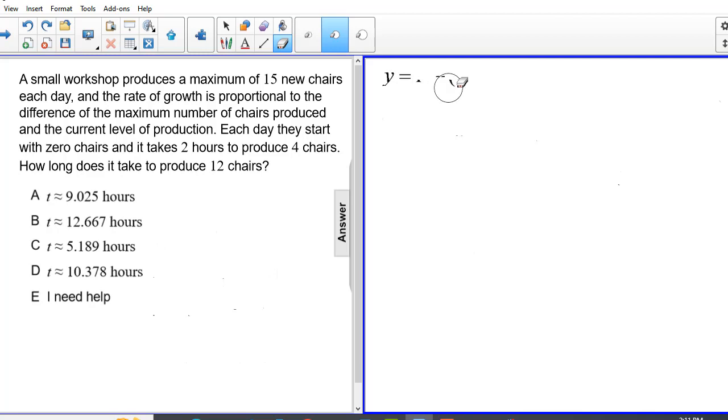So we start with our general inhibited growth equation, where y is equal to capital P minus the quantity capital P minus y sub zero times e to the negative kt. And from our scenario, we pull out the following substitutions. Our initial value, y sub zero, is zero.